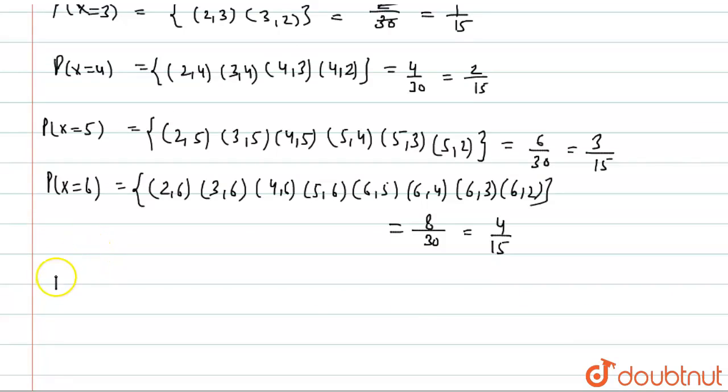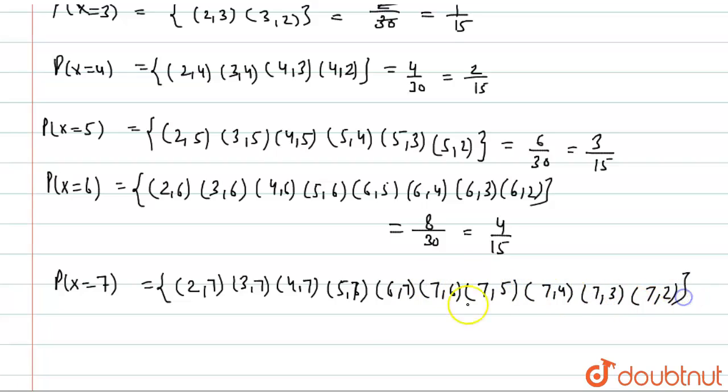Now P(X=7) will be equal to (2,7), (3,7), (4,7), (5,7), (6,7), (7,6), (7,5), (7,4), (7,3), (7,2). This is total 10 events, 10 by 30, which is equal to 5 by 15.